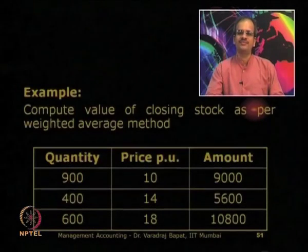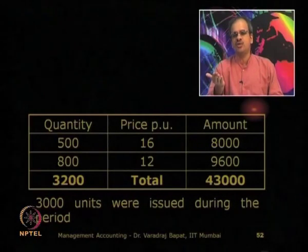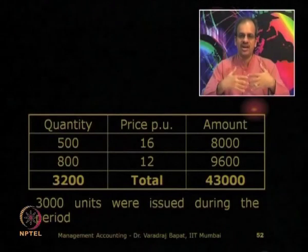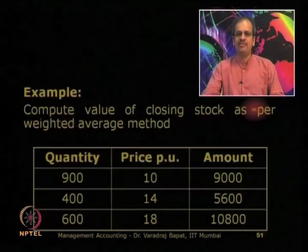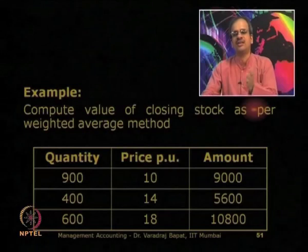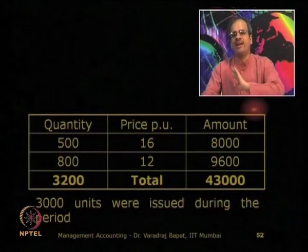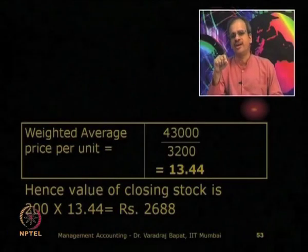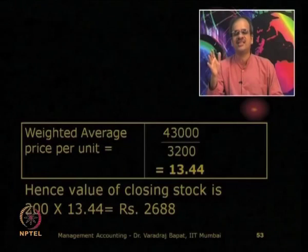As you can clearly see, 3,200 units have come in, out of which 3,000 are issued, so remaining 200 units are in hand. Instead of using FIFO or LIFO — which would pick up only the earliest or the latest stock — in the weighted average method we find the weighted average price of all the items. The weighted average price is 43,000 divided by 3,200, which is ₹13.44 per unit, and the value of closing stock is 200 × ₹13.44 = ₹2,688.